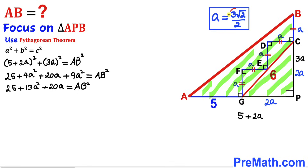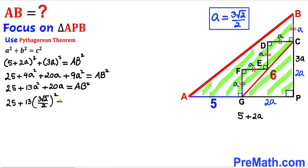Now we know that our lowercase a value is 3√2/2. Substituting that value in, we get: 25 + 13 × (3√2/2)² + 20 × (3√2/2) = AB².